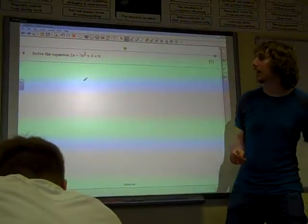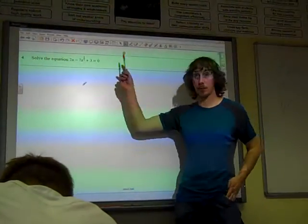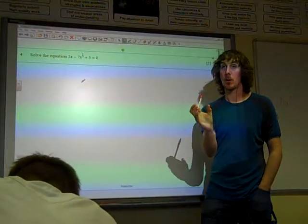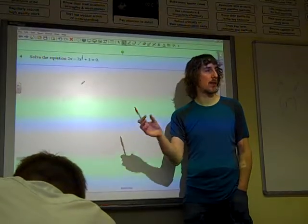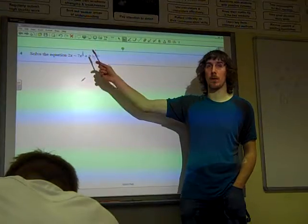And what we need to do there is to spot—we spot a stealth quadratic by looking for three terms. And if you look at the unknown terms, the power of one of them is going to be twice the power of the other. And that's the key thing to look for. If the power of one term is twice the power of the other one.